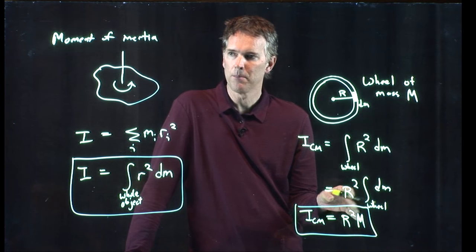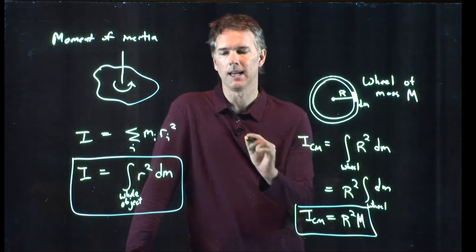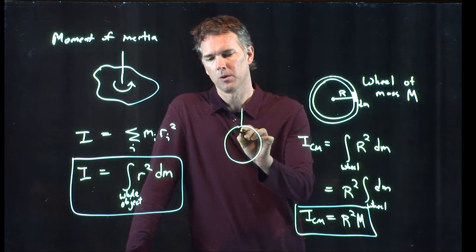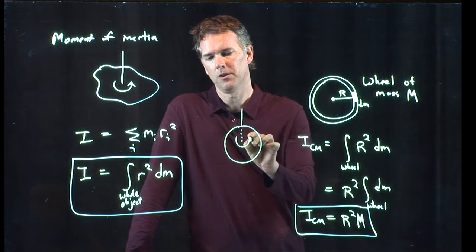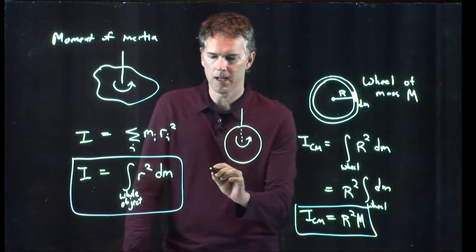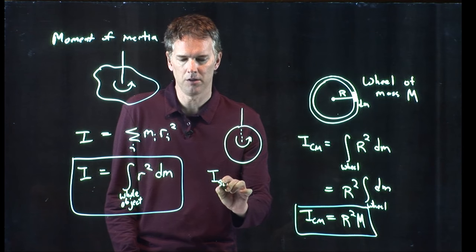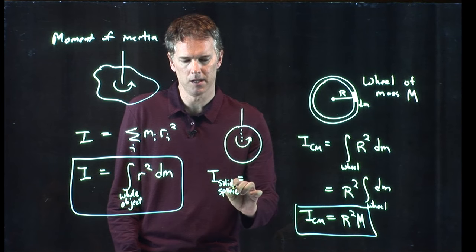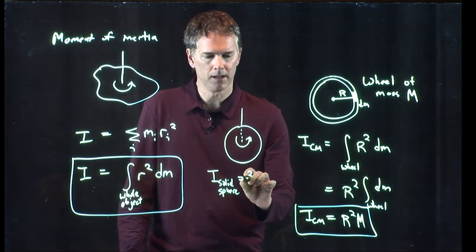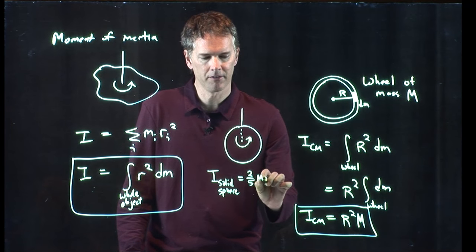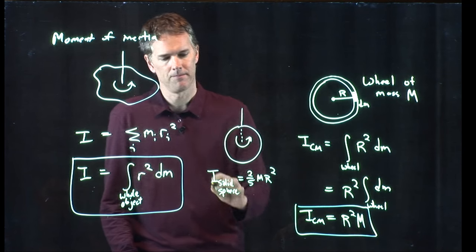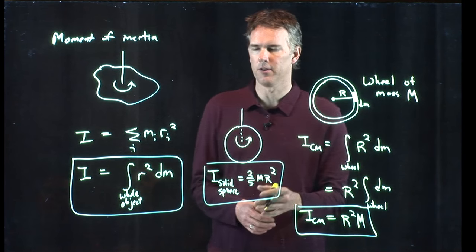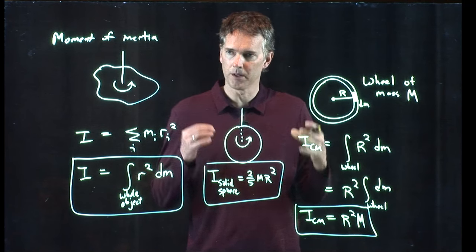If you do a more complicated example like a sphere, the integral becomes quite a bit more difficult to do. And if you do a solid sphere, you get something like, we're not going to do the integral here, but you get something like 2 fifths mr squared. And if you do a hollow sphere, you get something different. And if you do a hollow cylinder, you get something different. If you do a stick, you get something different.